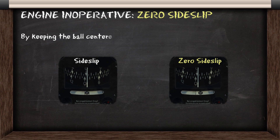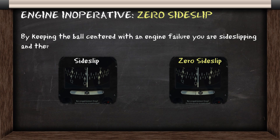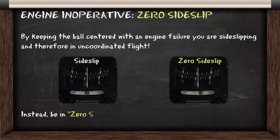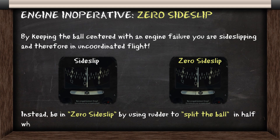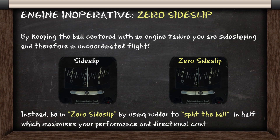By keeping the ball centred with an engine failure, you're actually in a sideslip and therefore in uncoordinated flight. Instead, aim to be in a zero sideslip condition by using rudder to split the ball in two by that line. This will maximize your performance and directional control.